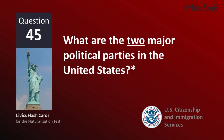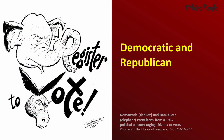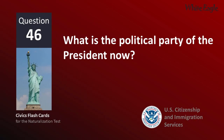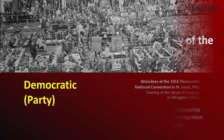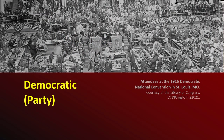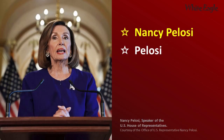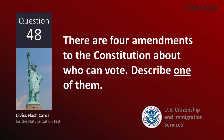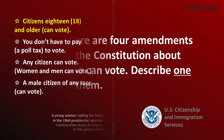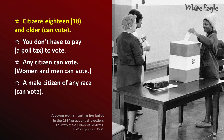What are the two major political parties in the United States? Democratic and Republican. What is the political party of the President now? Democratic Party. What is the name of the Speaker of the House of Representatives now? Nancy Pelosi. There are four amendments to the Constitution about who can vote. Describe one of them. Citizens 18 and older can vote.